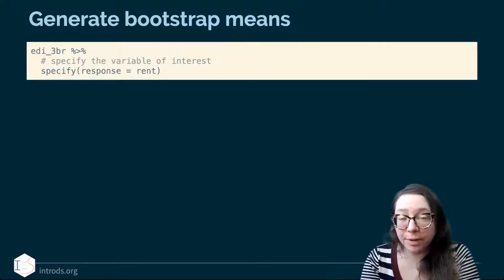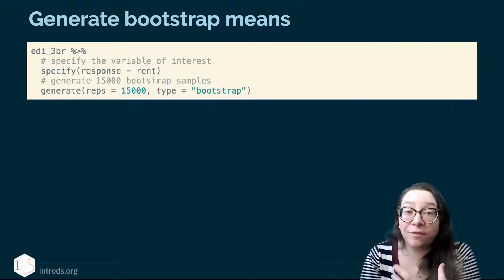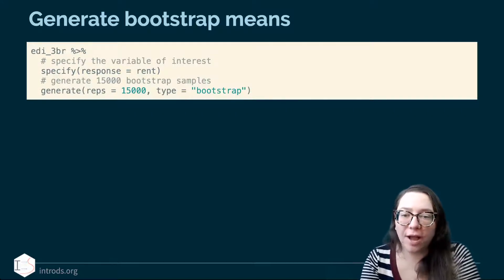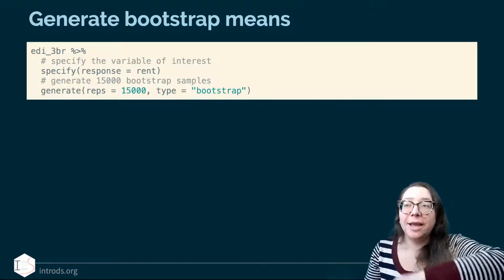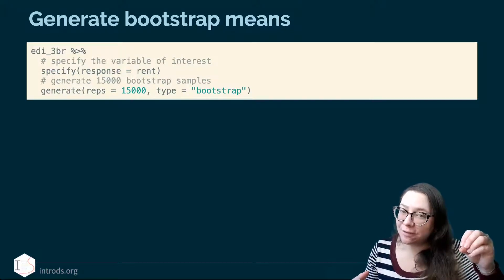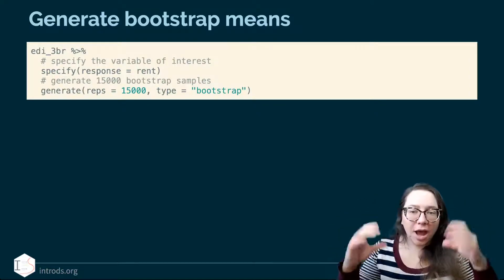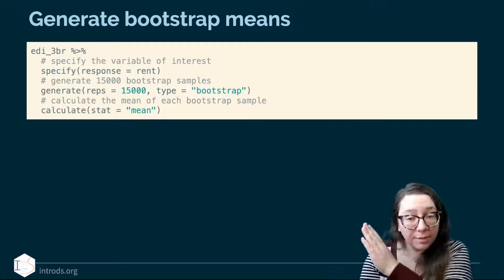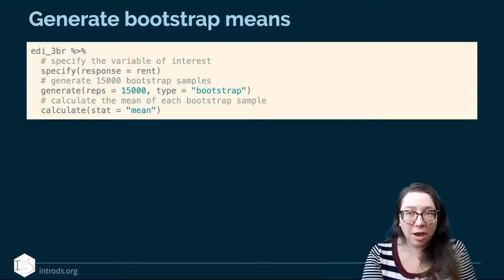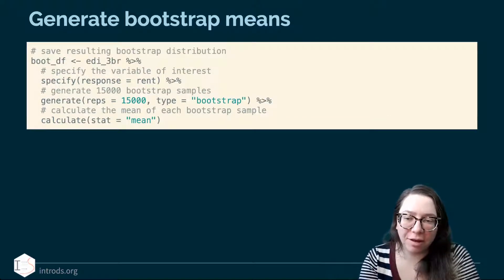We generate replicates — we said 15,000 is a good number — so we generate 15,000 bootstrap samples. It's like reaching into the bag and grabbing a random sample of 15 flats with replacement, then doing that same thing 15,000 times. We then calculate the mean of each one. I'm not interested in the individual values in each sample, but I am interested in the means of each sample. We save that value, so we end up with 15,000 means.